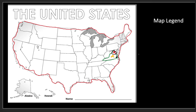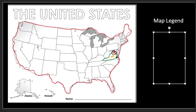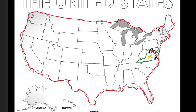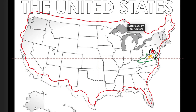So we have done the outline of the United States. We have done our outline of Virginia. We know where Norfolk is, Richmond, and Washington, DC. So now we have to do our map legend. Our map legend is super important. So let's make sure Miss Sparks has white going on here because you won't be able to see it. Let's move this down.